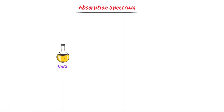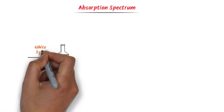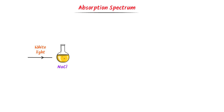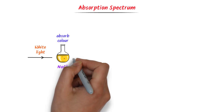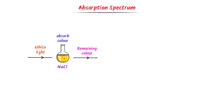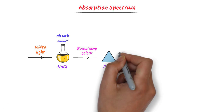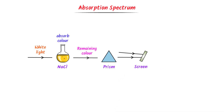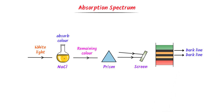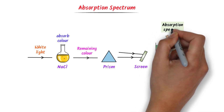Now we will learn about absorption spectrum. Consider a sodium chloride solution. White light falls on this solution, which absorbs some colors of the white light — certain wavelengths — and radiates the remaining light colors. Passing the radiated light through a prism and tracing it on a screen, we can observe dark lines on the screen. This pattern of dark lines is called absorption spectrum.